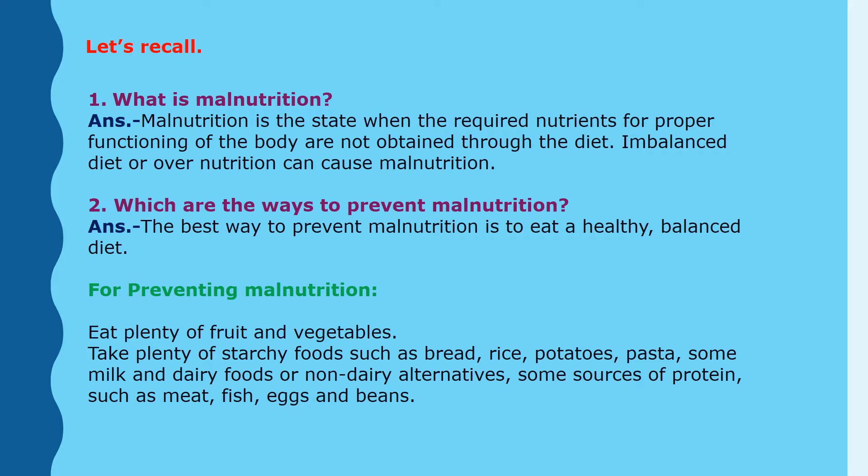The second question: which are the ways to prevent malnutrition? To prevent malnutrition, we have to eat a healthy and balanced diet. We should eat plenty of fruits and vegetables, take plenty of starchy foods such as bread, rice, potatoes, and pasta, some milk and dairy products or non-dairy alternatives, and some sources of protein such as meat, fish, eggs, and beans.